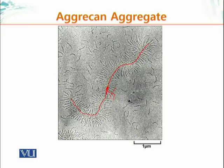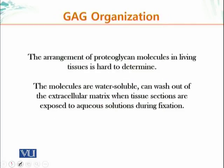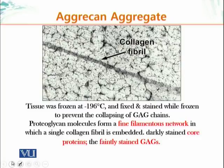It is a challenge to take these electron micrographs because these molecules are very difficult to photograph in EM. One of the reasons is that these molecules are water-soluble — they can wash out while the tissue is being processed. It is a tricky procedure, and we will talk about that later in a later module. But let me show you another example of the placement of these GAG molecules.